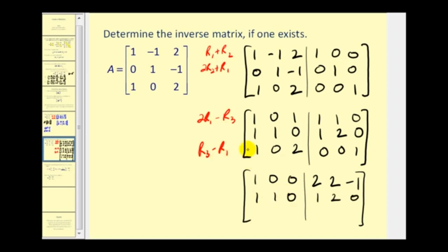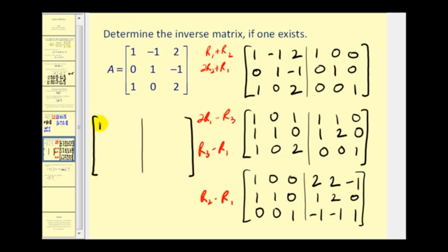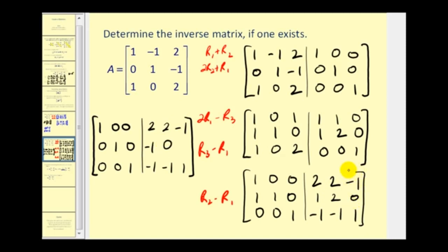We're close — we have a main diagonal of ones and zeros in the right places, but we need one more element to be zero. So we replace row two with row two minus row one: one minus one is zero; one minus zero is one; zero minus zero is zero; one minus two is negative one; two minus two is zero; zero minus negative one is positive one. Now the left side is the identity matrix.